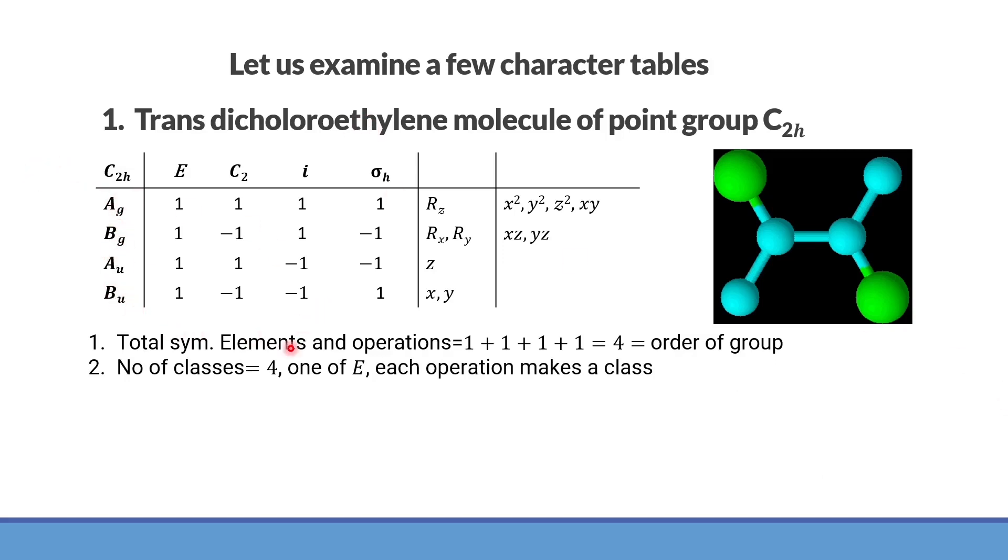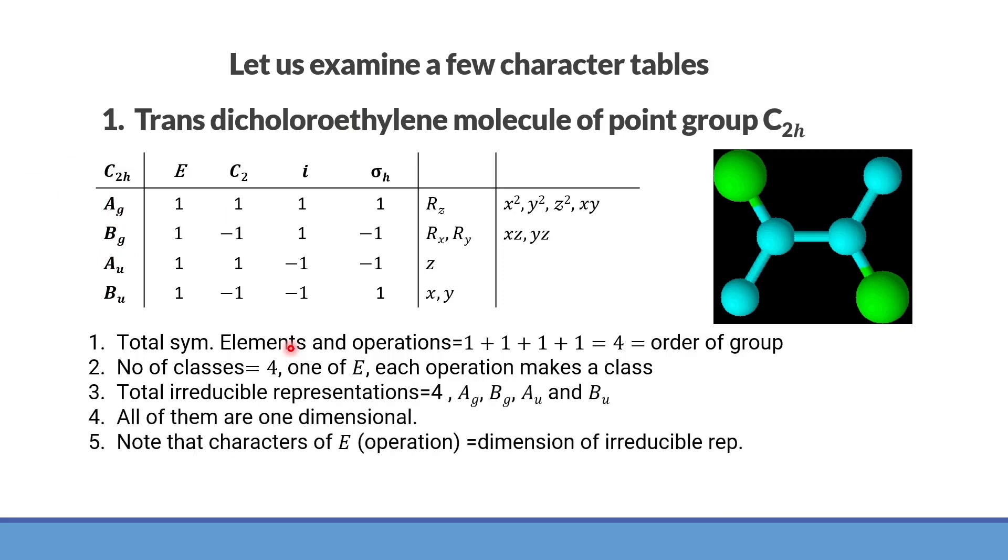Now, you just look at here. Total irreducible representations are 4, all of them are one dimensional. A and B are of course terms used for one dimension and the character of identity is always equal to dimension. Because they are one dimension, the character for identity would also have one each. So this is 1, 1, 1, 1. This is obtained by squaring the characters on the first row. That is also plus 1. The rest of the elements can be filled according to the orthogonality concept. That the net result should be 0. So there should be 2 plus 1 and 2 minus 1. That is how we can generate this particular character table. You can also verify the orthogonality. Take any two irreducible representations and you will see that their product has to be 0.